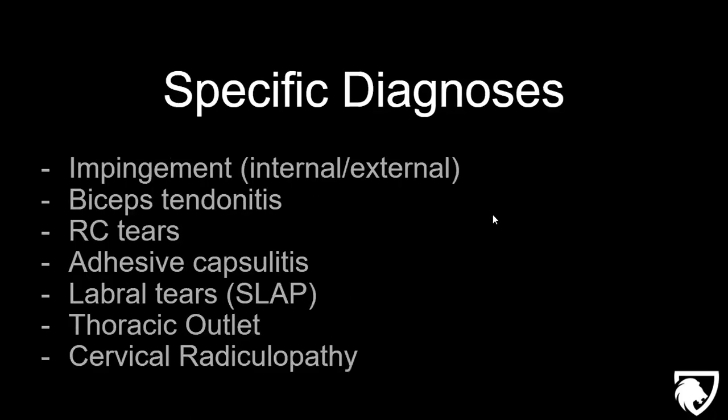Now I want to quickly run through some specific diagnoses — these are good to know since you might see them on a referral. Impingement is kind of a junk term meaning something is pinching inside the shoulder. Impingement is actually normal — muscles are supposed to slide on things — but it becomes a problem when you run out of space and compressive force becomes irritable. There's internal and external impingement: intra-articular and extra-articular.